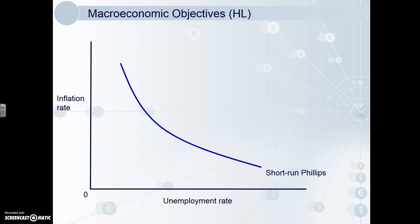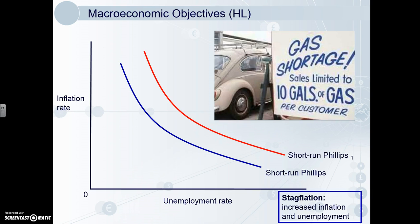The short run Phillips curve can shift outwards. This would be caused by a decrease in short run aggregate supply. For example, in the 1970s there was an oil crisis, which caused the cost of production of goods and services to increase. Because the price of oil is a factor of production for almost everything, as it increases, the price of everything increases. The result was higher inflation and higher unemployment happening at the same time, causing the shift outwards. This is otherwise known as stagflation.